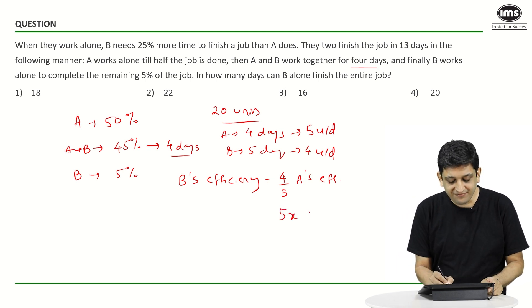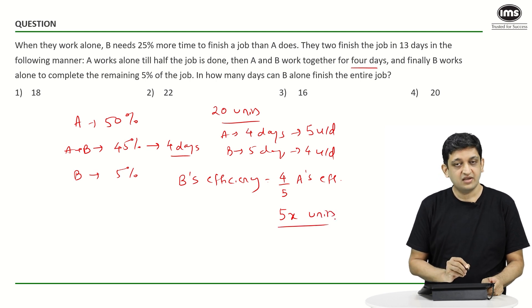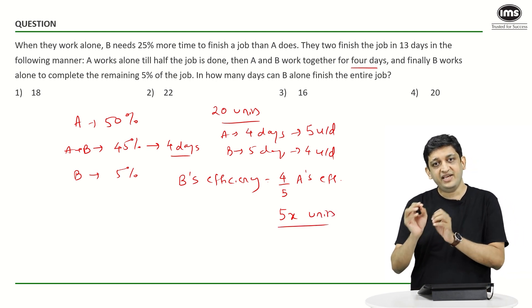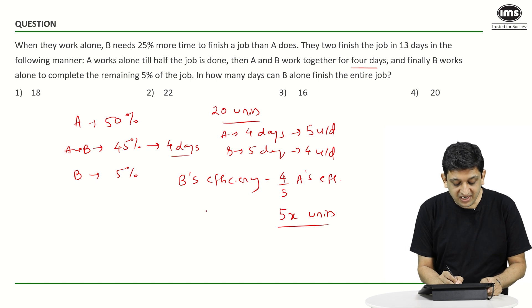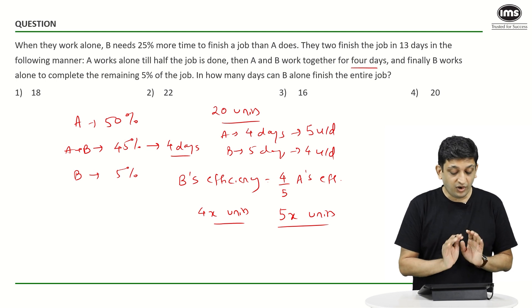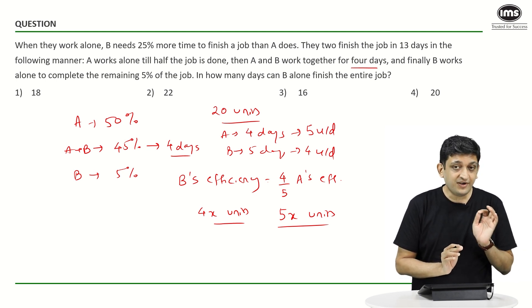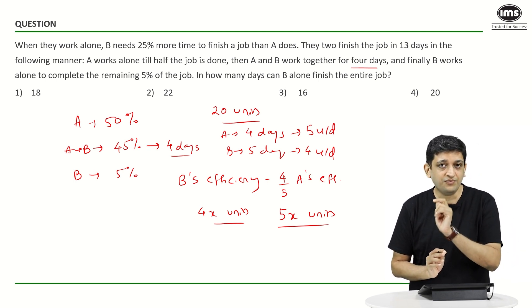Now if B's efficiency is 4 by 5 times A's efficiency, what does it mean? Whenever A does let us say 5X units, whenever A does 5X units of work, B will end up doing 4X units of work in the same amount of time.